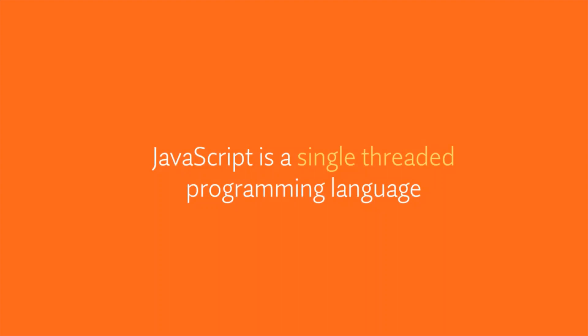Well, we already know that JavaScript is a single-threaded programming language. That means the code is executed line by line, and once the execution of one piece of code is complete, then only the next code in the program will be executed. So if a task takes a long time — for example, if we are making an HTTP request to the server — it is going to take some time. The next statement after that HTTP request will have to wait for its execution; it will only get executed when the HTTP request completes. So we can say that synchronous code is blocking in nature.